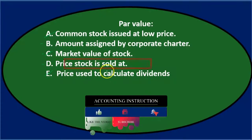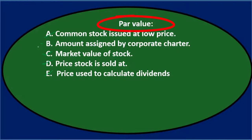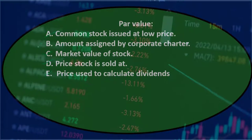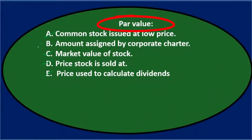Price stock is sold at is probably the same thing as market value — what we can get for it — so C and D are basically defining the same thing. We can't have both, so we cross those out and are left with B: amount assigned by corporate charter. The par value is just an arbitrary number assigned to have conformity and standardization with common stocks. Final answer: par value — B) amount assigned by corporate charter.